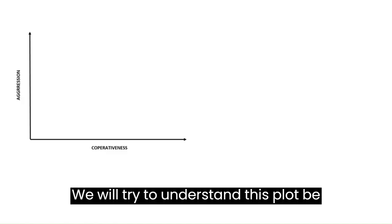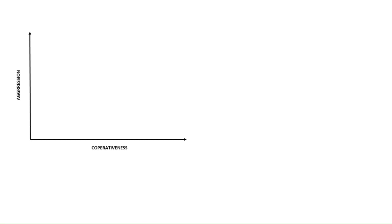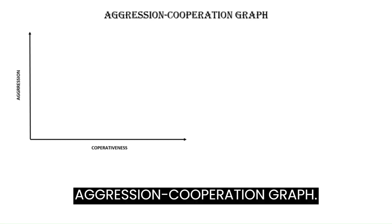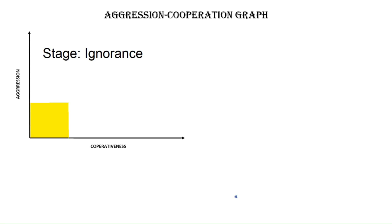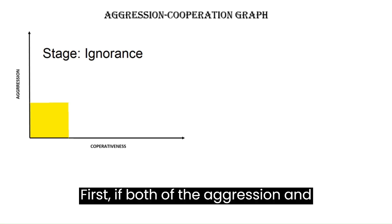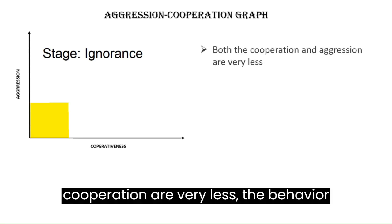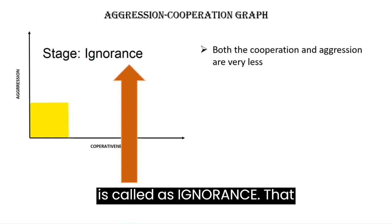We will try to understand this with a plot between these two — the famous aggression-cooperation graph. But if both aggression and cooperation are very low, the behavior is called ignorance.